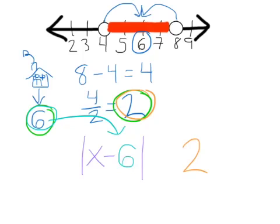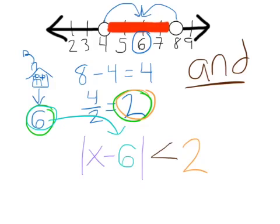This is an AND situation — we need to stay close to home. When we're staying close to home, our distance is restricted, so we use a less than symbol. The boundary value circles are not filled in, so we are not in an 'or equal to' situation. So our answer is: the absolute value of the quantity X minus 6 is less than 2.